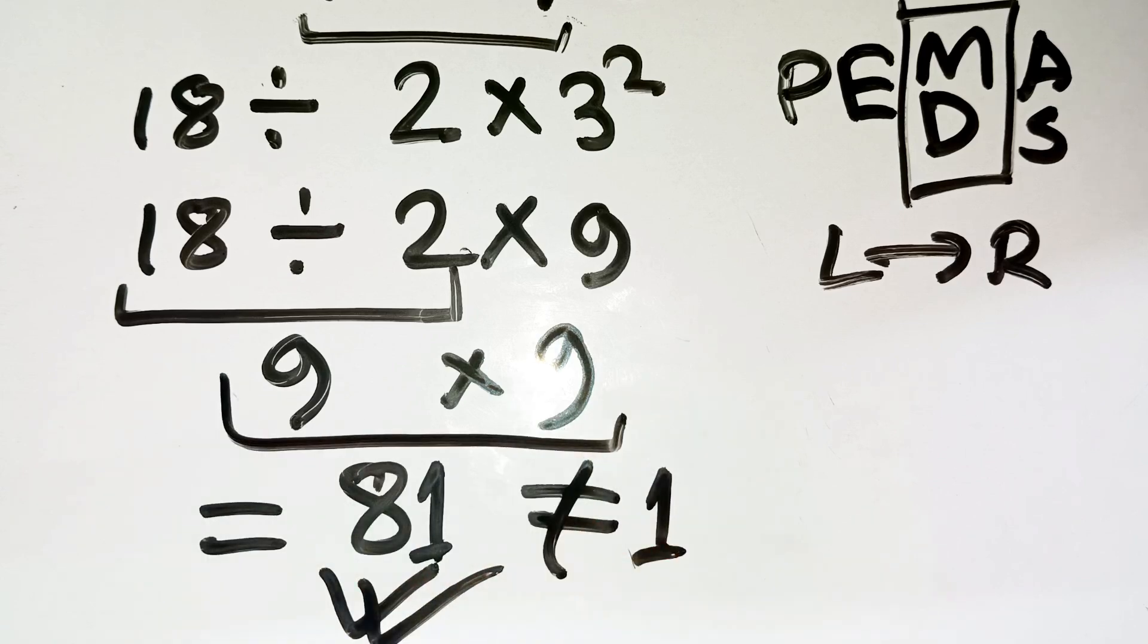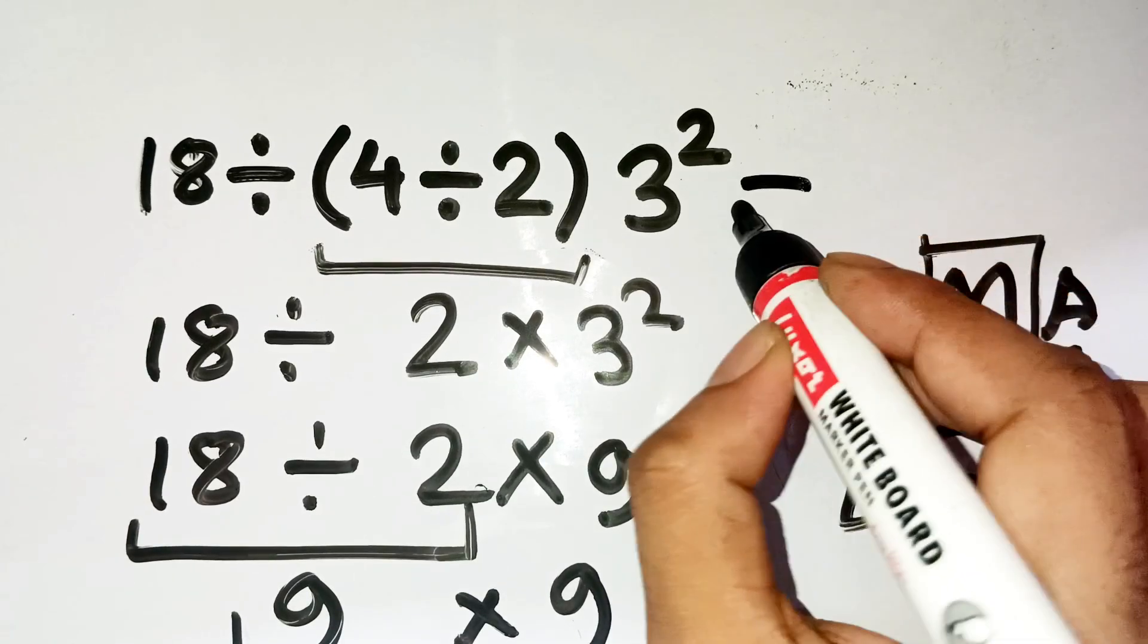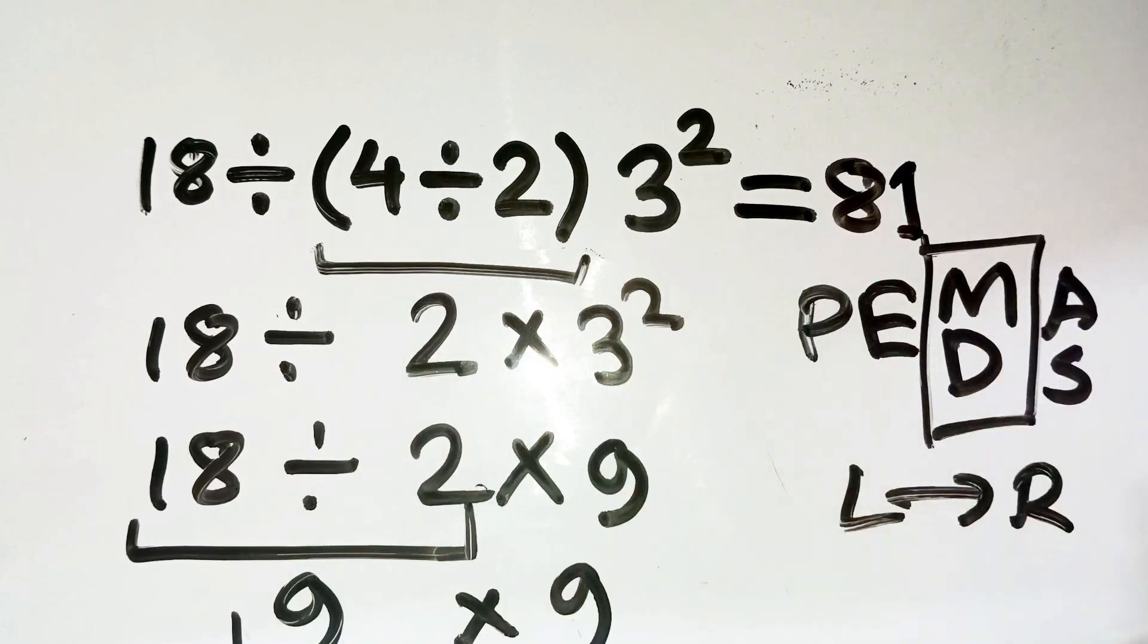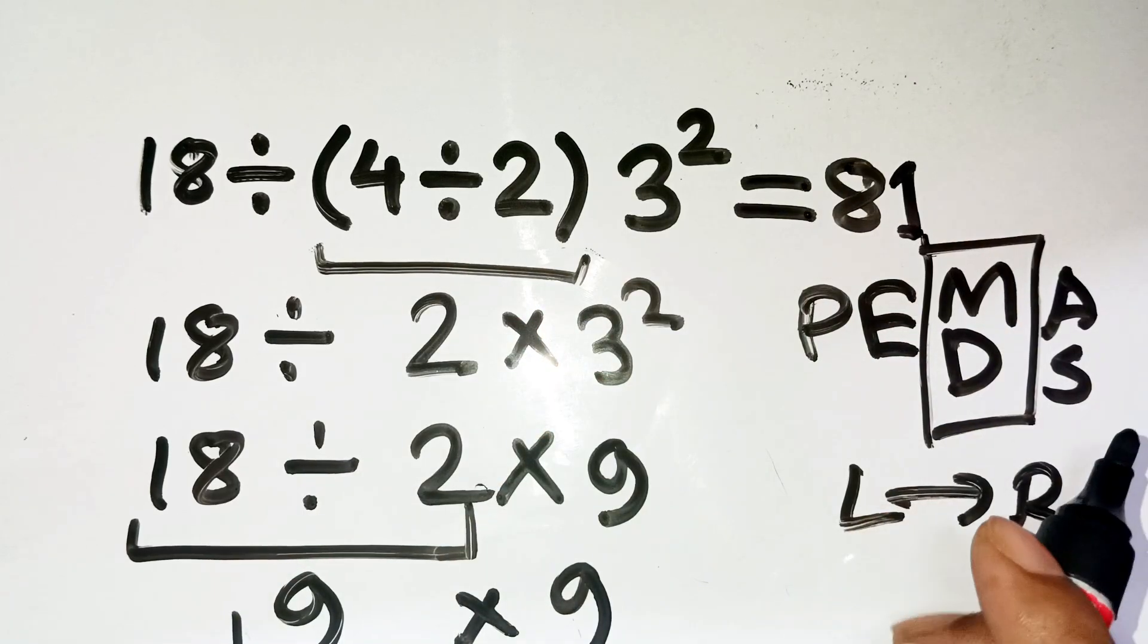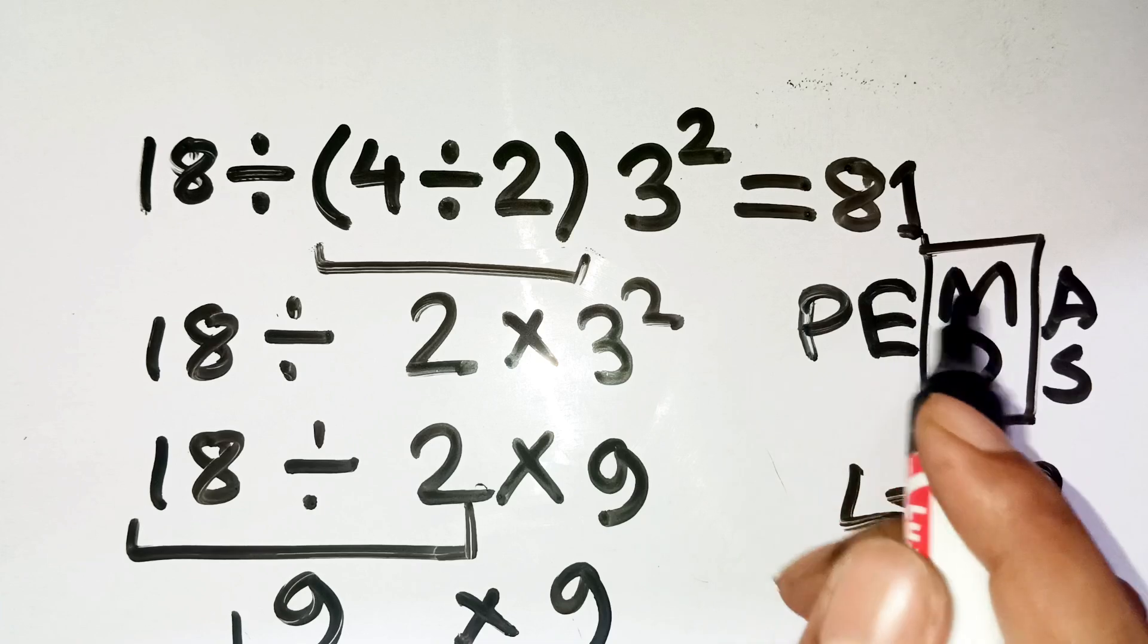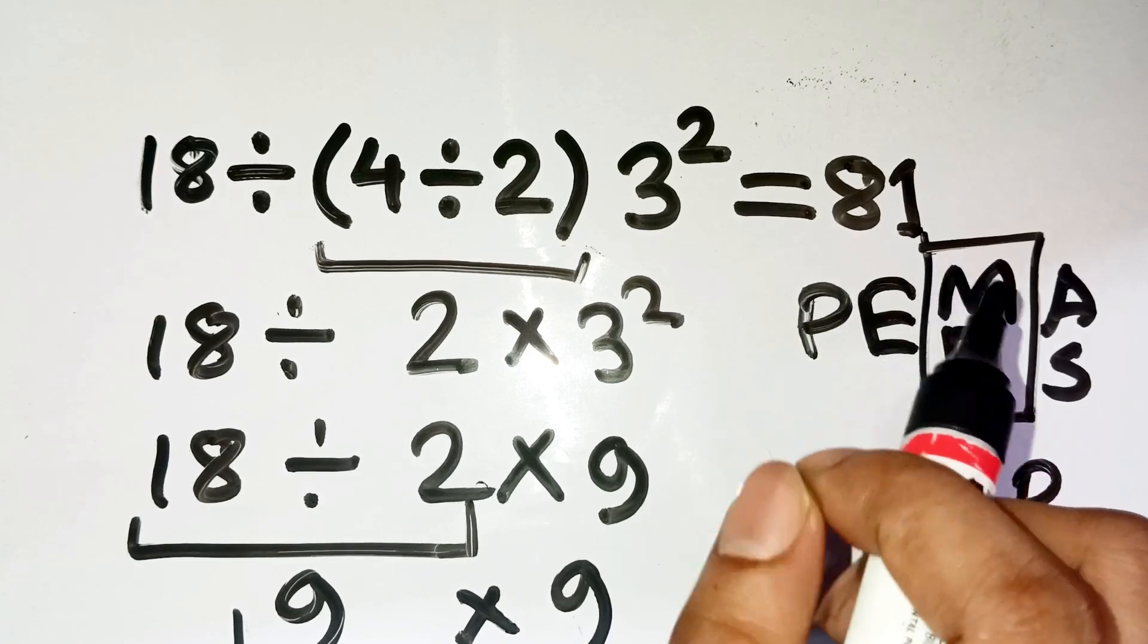Crazy how just one tiny rule in PEMDAS flips everything, right? So the next time you see something like this, don't rush to multiply before dividing. Always go left to right for those two. If you've got any valid arguments or want to prove me wrong, drop it down in the comments. Thanks for watching.